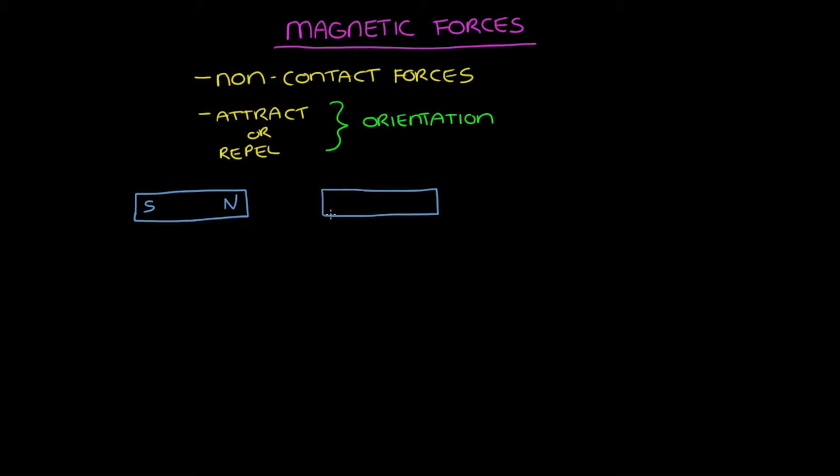So if you face the north pole of one magnet to the south pole of another magnet, guess what? They will be attracted to each other. But if you turn one of those magnets around so that you have two north poles facing each other, they will repel.